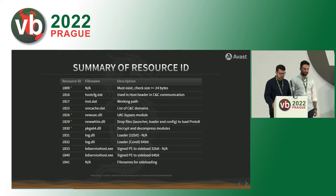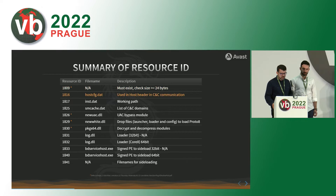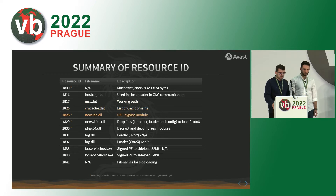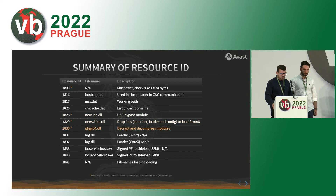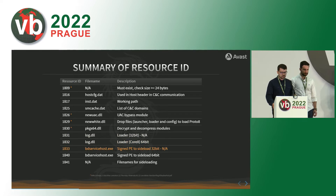They have multiple types of resources and multiple types of payloads — for instance, different configuration files, a list of CNC servers, and some helper DLLs for UAC bypass. They also had the next stage, which was the log DLL and a PE which is meant to sideload this log DLL.